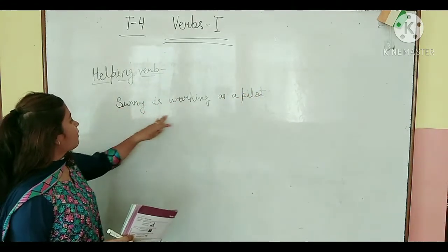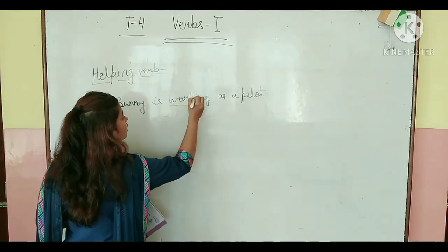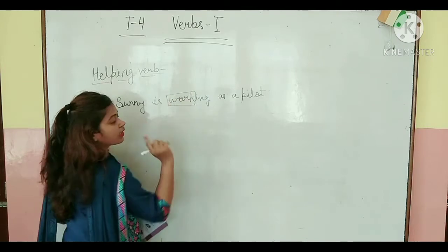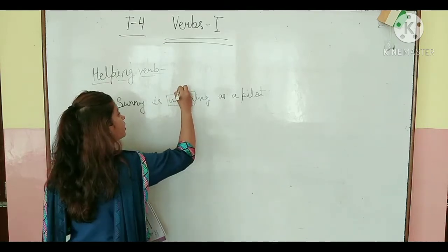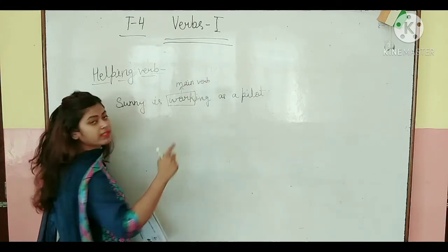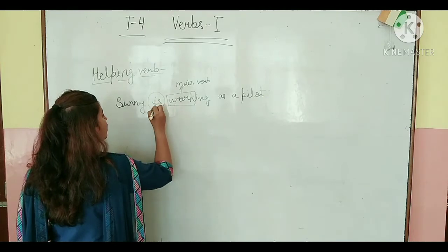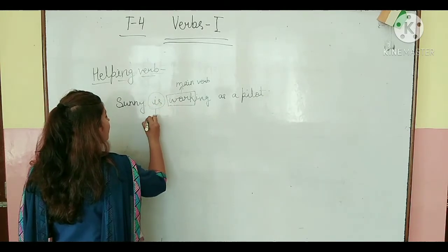So here in this example, Sunny is working as a pilot. So this verb, work or working, it is a main verb. And we always put auxiliary verb before main verb or helping verb before main verb. So 'is' is the helping verb.